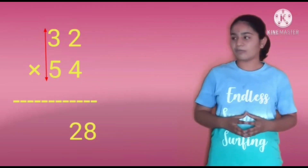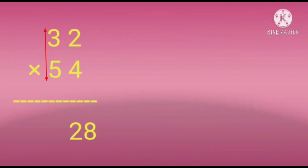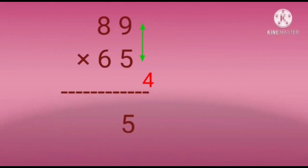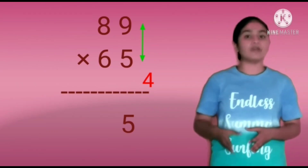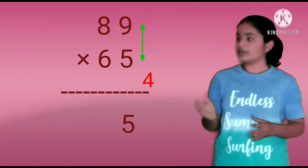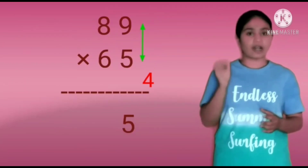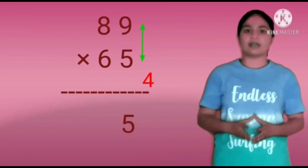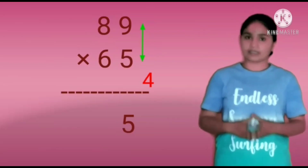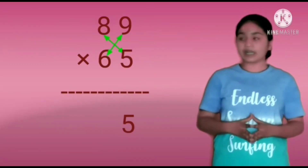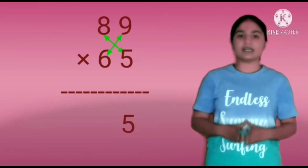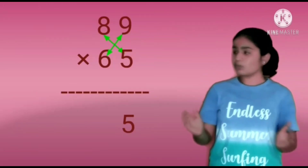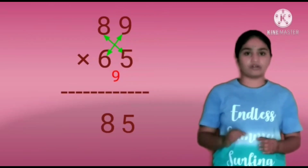Now let us see another example. Here, 89 is multiplied by 65. We have to do unit digit multiplication. That is 9 into 5 equals 45. So, write the 5 in the unit digit and keep the 4 as carry. Next, we have to do cross multiplication of 8 into 5 and 6 into 9. It will be 40 and 54.